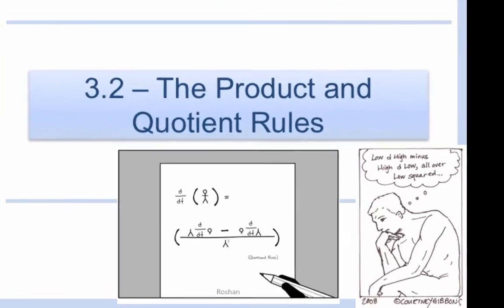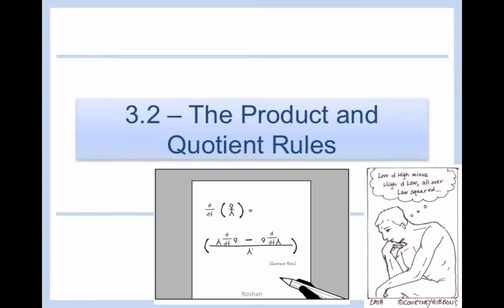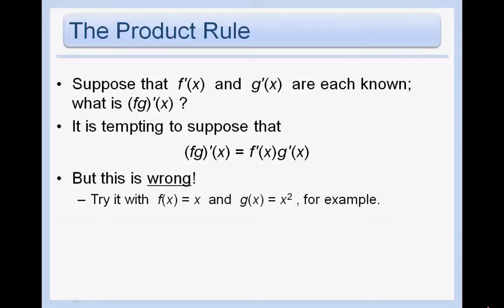The product and quotient rules. The product rule is going to be a very important one for us, and it is going to allow us to find the derivative of the product of two functions. So suppose we have two functions, f of x and g of x, and we know f prime and g prime. What is f times g prime of x?